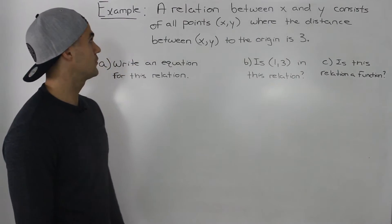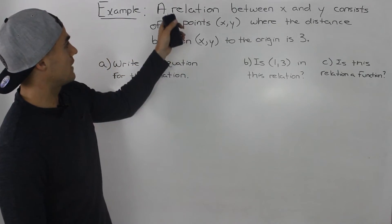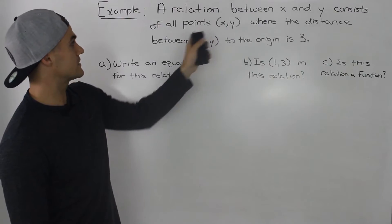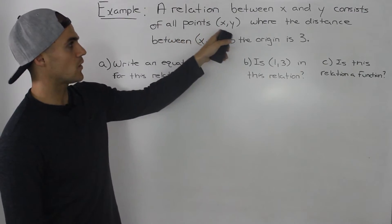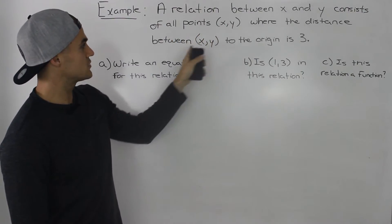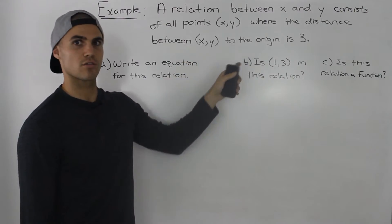Yo, what up? Let's do an example here. So we have a relation between x and y consisting of all points (x, y) where the distance between (x, y) to the origin is 3.